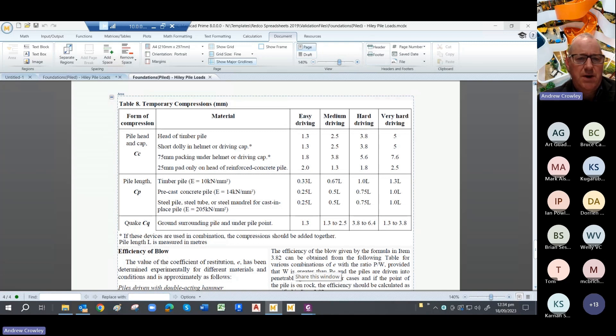CP is for the pile length, and that gives you values for timber, concrete, and steel, again ranging from easy to very hard driving. And the CQ for the quake ranges from 1.3 to 3.8, and it's a matter of engineering judgment which sort of values you put into these as well.